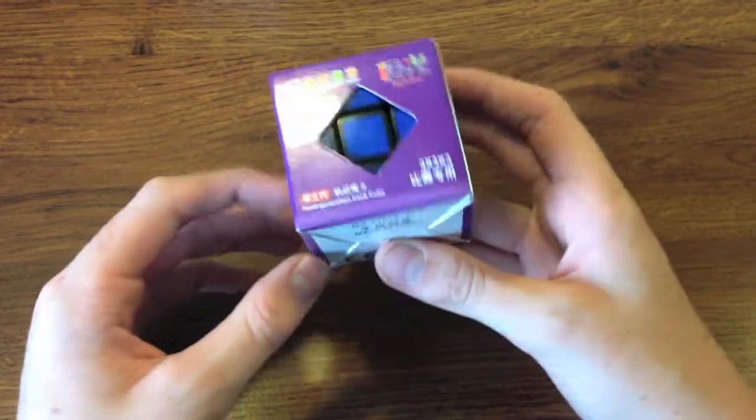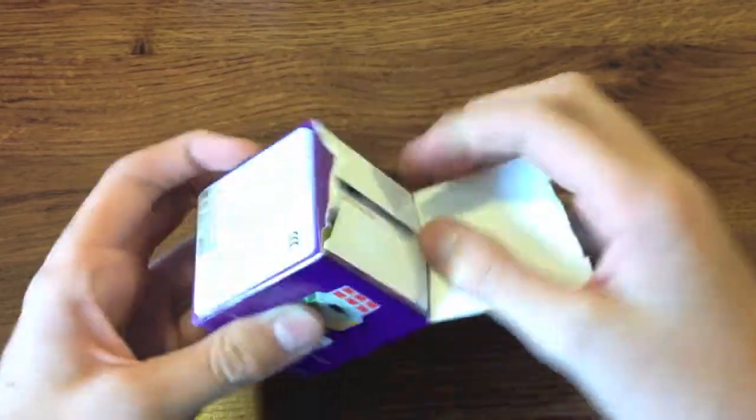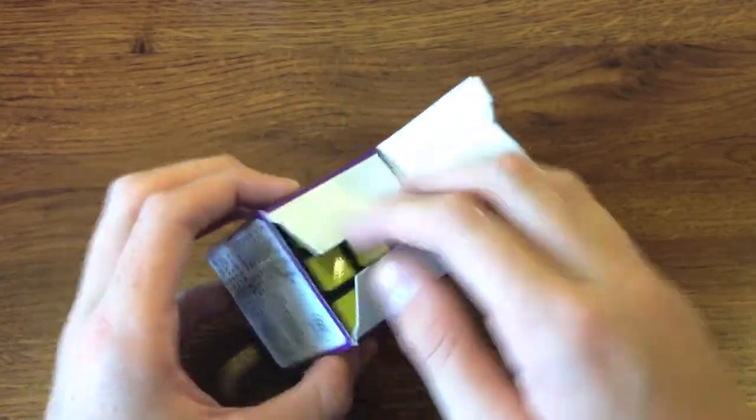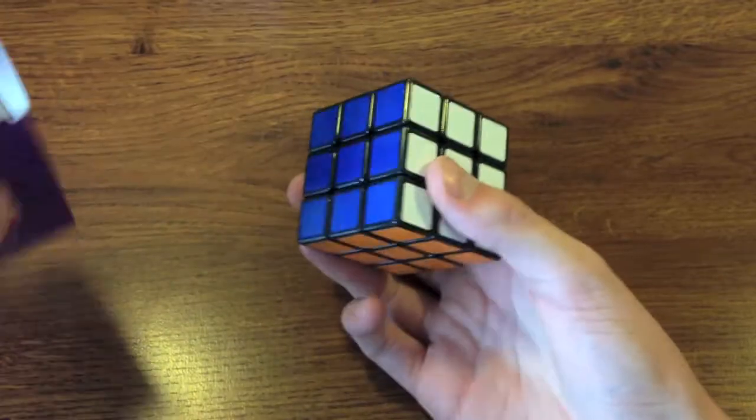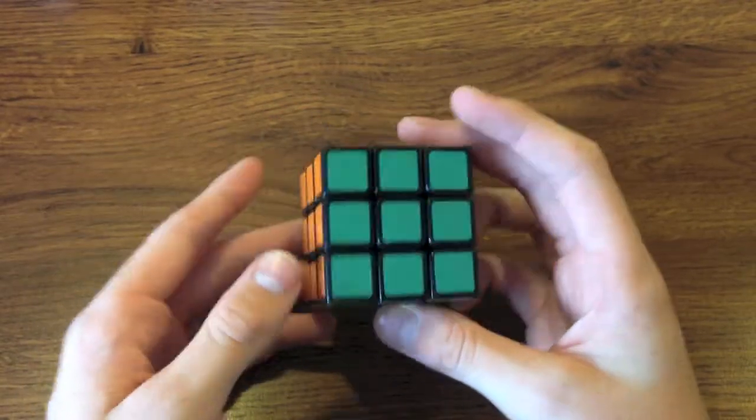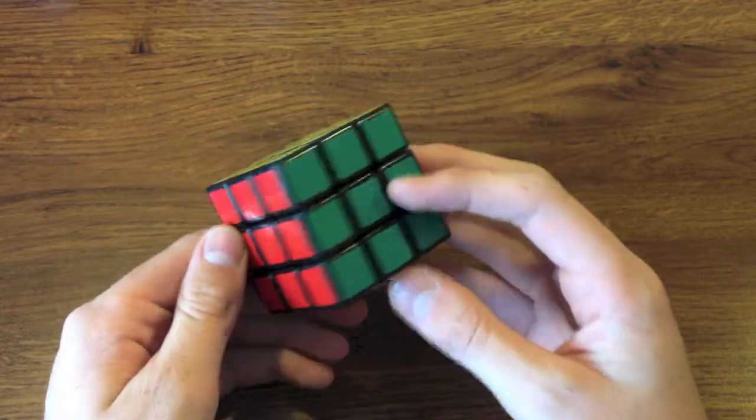Next, we have the Shangsha Aurora. At a cube meet, I've tried a Shangsha Wind and I really liked it and it was modded, so I thought I'd just try out the Aurora. I was thinking about getting this or the CX-3, but I didn't want to pre-order the CX-3 yet, so I'll probably get that later.